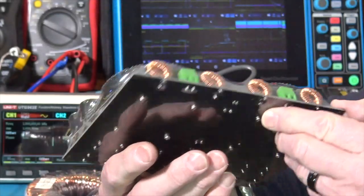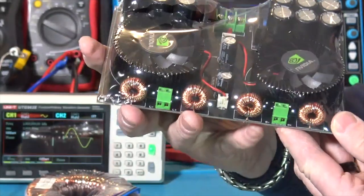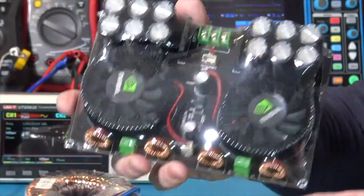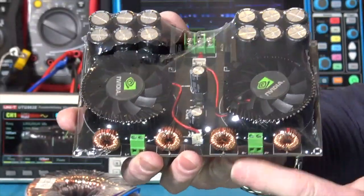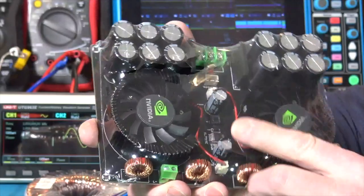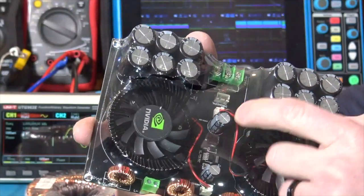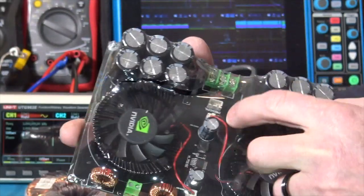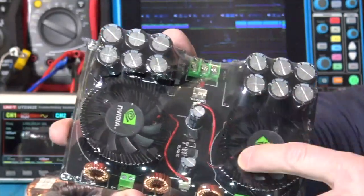This is what they call the red core toroid. So, anyway, seems pretty nice. And in here, there's some regulators to run the fans. You can see the little power cables for each fan.